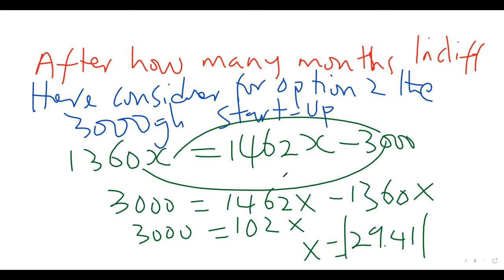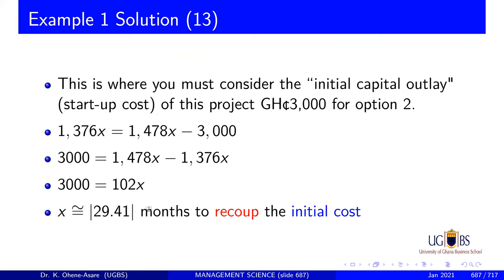This means that it will take 29.41 months to recoup the initial capital cost. That will be the time when the two options become indifferent. For how many months will it take to be indifferent? It is when you have recouped the initial capital cost — 29.41 months.